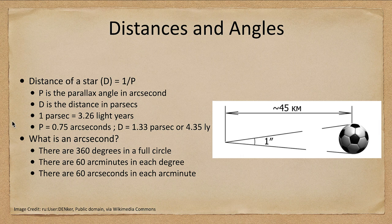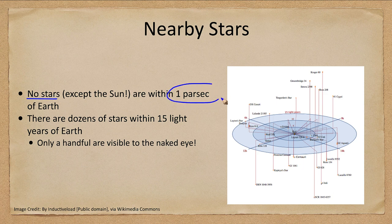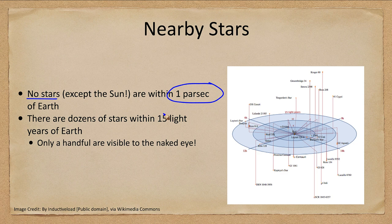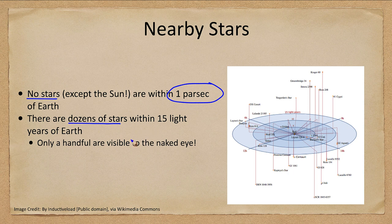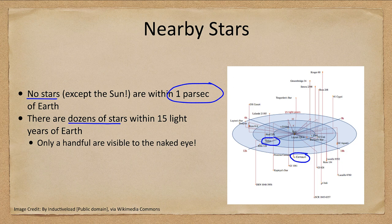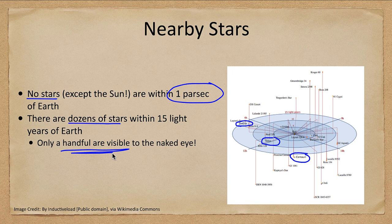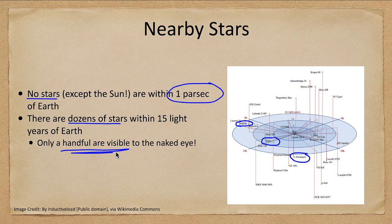So let's look a little bit at the nearby stars then. There are no stars, other than our Sun of course, that are within one parsec of Earth. No star has a parallax of greater than one arc second. However, there are dozens of stars within about 15 light years of Earth. And if you take a look at these, you probably don't recognize most of the names. Some of the primary stars you hear of, things like Alpha Centauri, and you might hear of some of the others. There's the bright star Sirius, and a couple of others, Procyon, one of the bright stars in the sky. But only a handful of these are visible to the naked eye. Remember, most stars are very small and faint. And even though they're very close, they're essentially invisible to us.